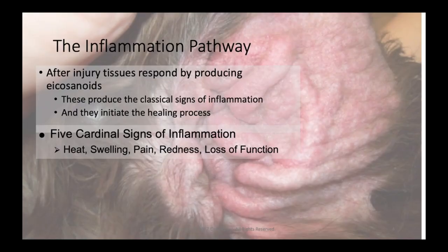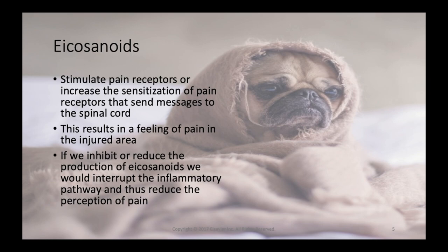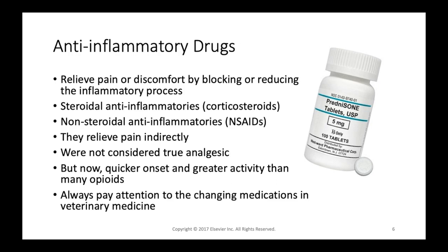Looking at the inflammatory pathway: after injury, tissues respond by producing icosanoids, which produce the classical signs of inflammation and initiate the healing process. Icosanoids can be both beneficial and harmful — they produce the five cardinal signs of inflammation: heat, swelling, pain, redness, and loss of function. Icosanoids stimulate or sensitize pain receptors that send messages to the spinal cord. If we inhibit or reduce the production of icosanoids, we interrupt the inflammatory pathway and thus reduce the perception of pain — that is the goal of many anti-inflammatory drugs.